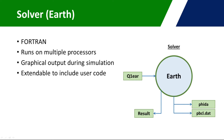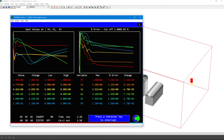The solver can be interrupted mid-run to change parameters such as relaxation or data output frequency. The solver provides a graphical window that displays information about each variable's convergence. This can be used to judge how effectively a run is performing. Here is an example of that graphical window on the same case we saw earlier.